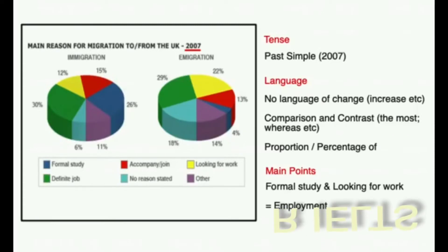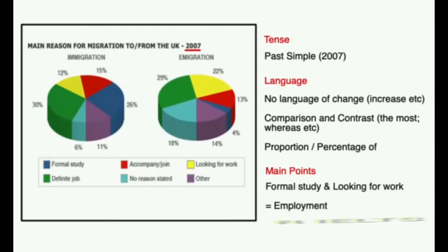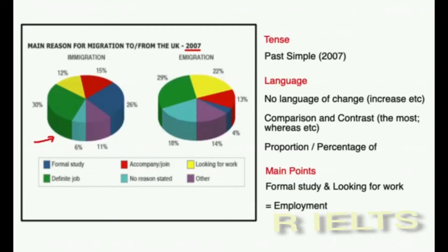Sometimes you may get two IELTS pie charts each with a different year, so you can do that. But in the case of this IELTS pie chart it's comparing two activities rather than two years. So you can only use the language of comparison and contrast such as the most, more than, whereas, however, etc. With pie charts we also use the words 'percentage' or 'proportion of' to talk about the figures. For example, you can say 'the proportion of people migrating to the UK was 30%, whereas the proportion of people emigrating was slightly lower at 29%.'